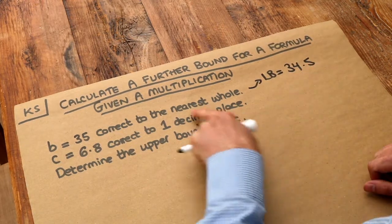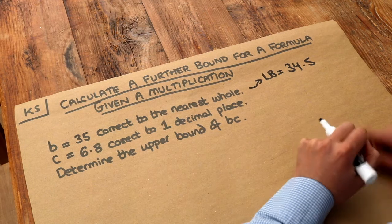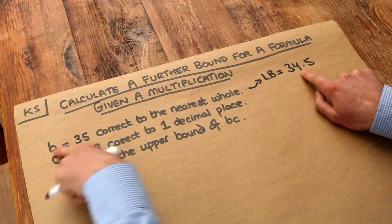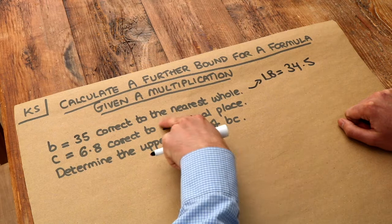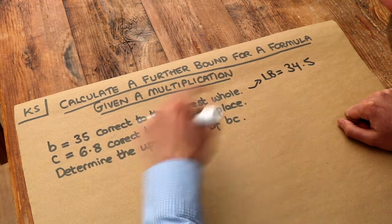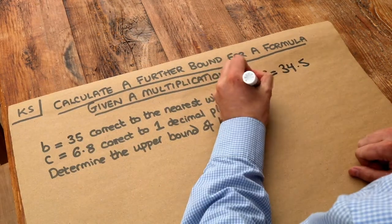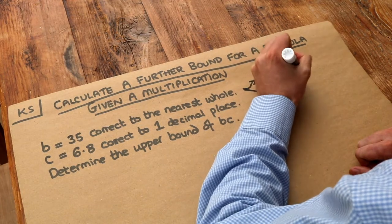Because if you round 34.5 to the nearest whole you would get 35, but it can't be any lower, because if B was actually 34.4 for example, then to the nearest whole that would be 34, not 35. And then the upper bound would be 35.5.